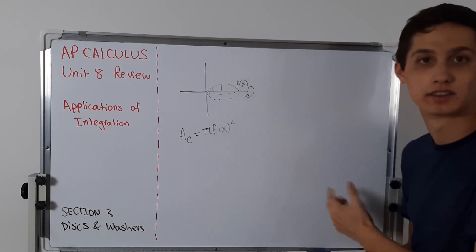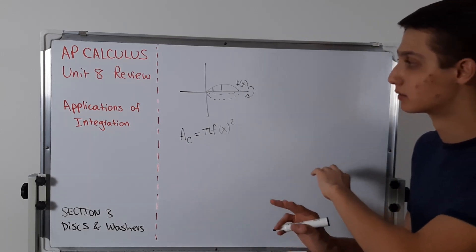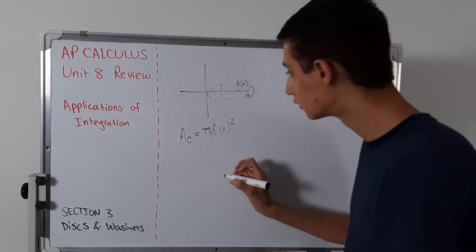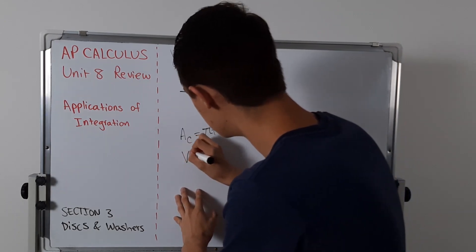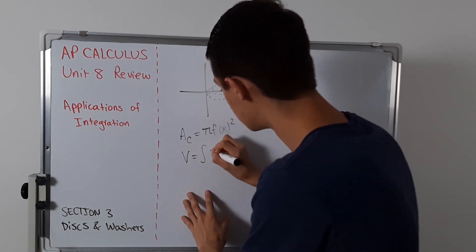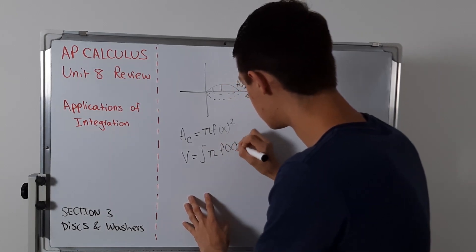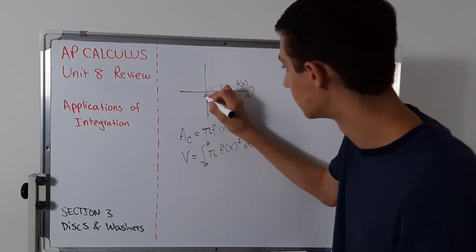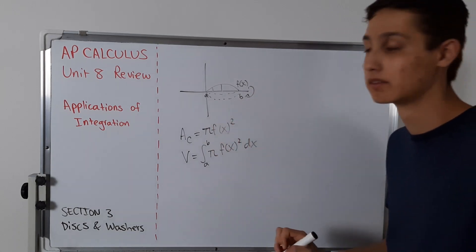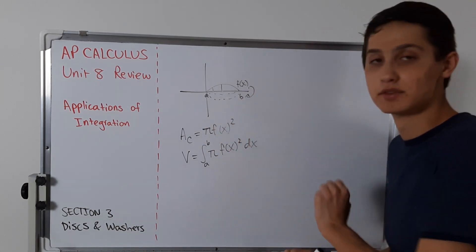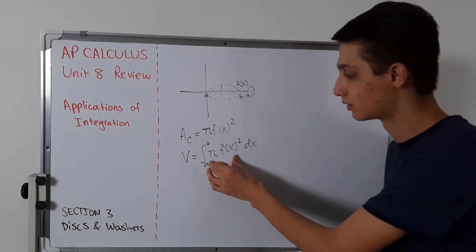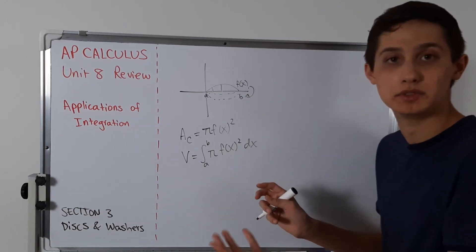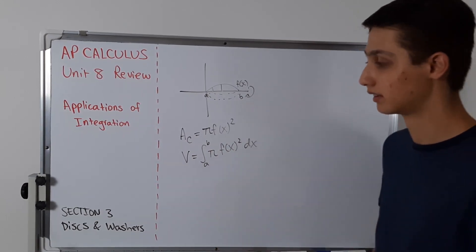We want to know what it is for all cross sections added together — and that's specifically what an integral is. So if we want to find the volume, this is going to be the integral from a to b of pi times f(x) squared dx. Here a looks like zero and b is something like five. This is the area of a circle, and we're integrating all of these discs.